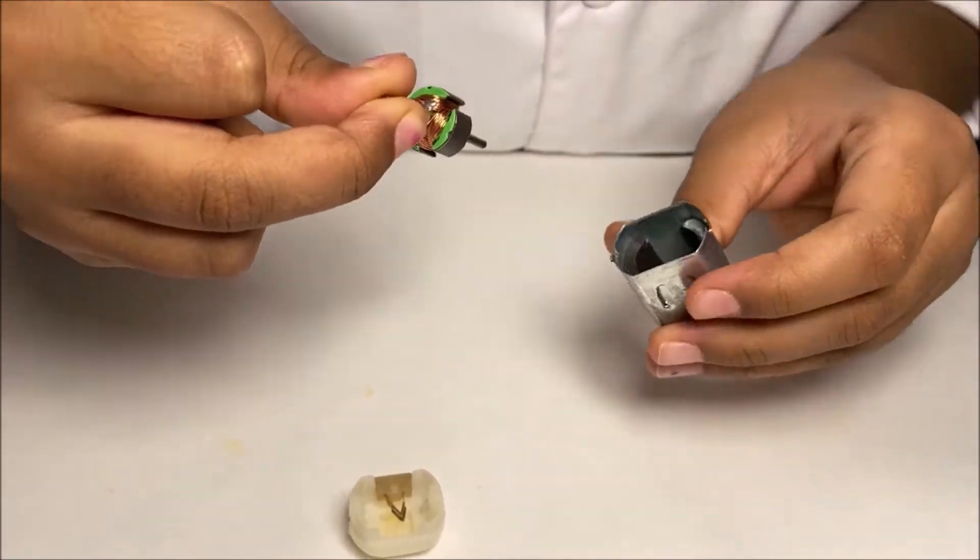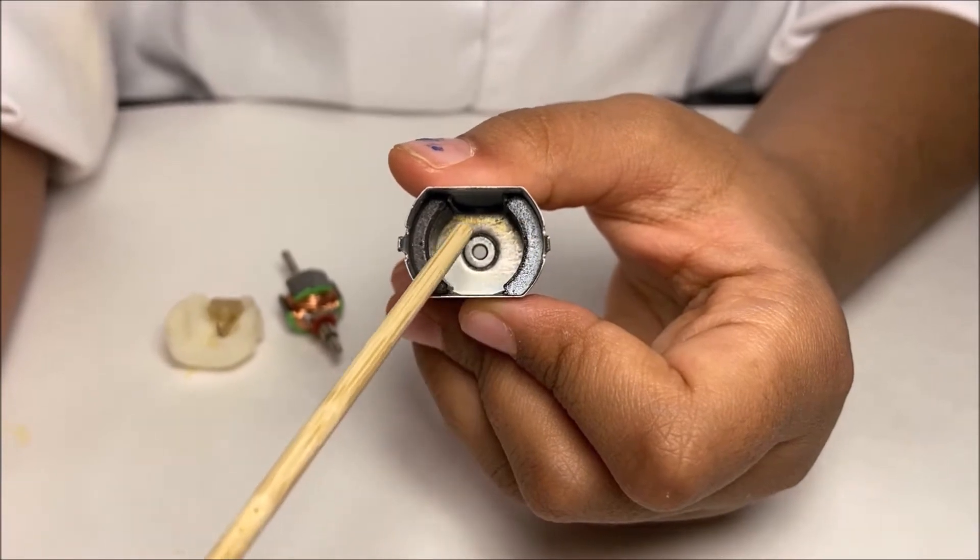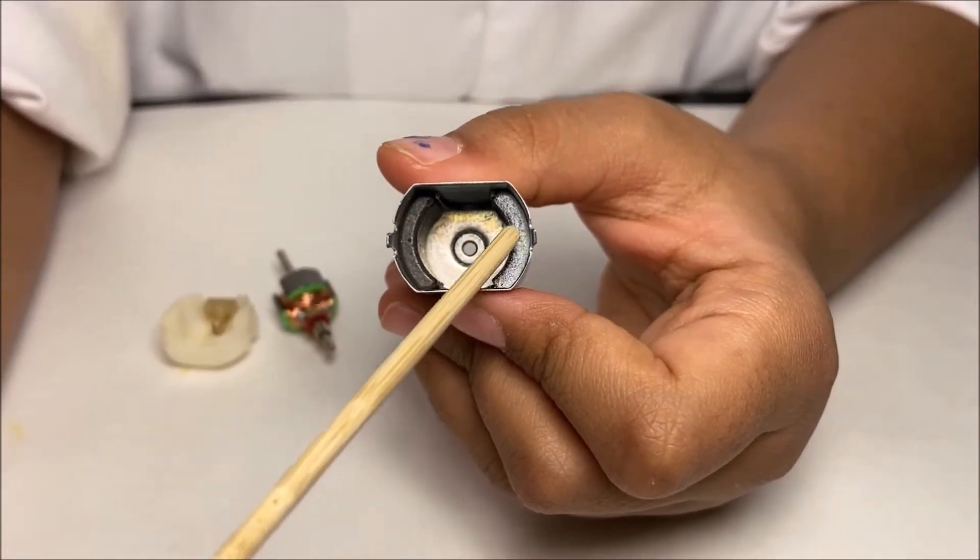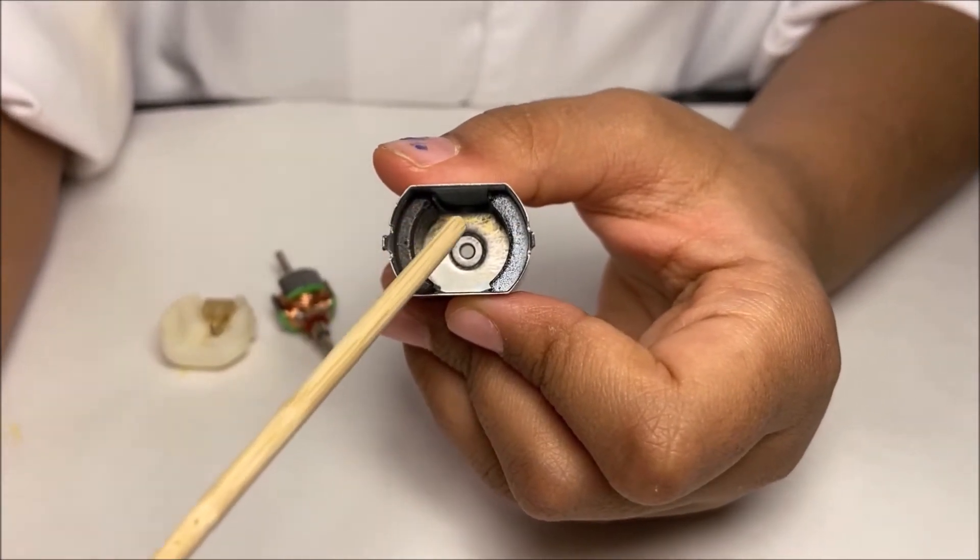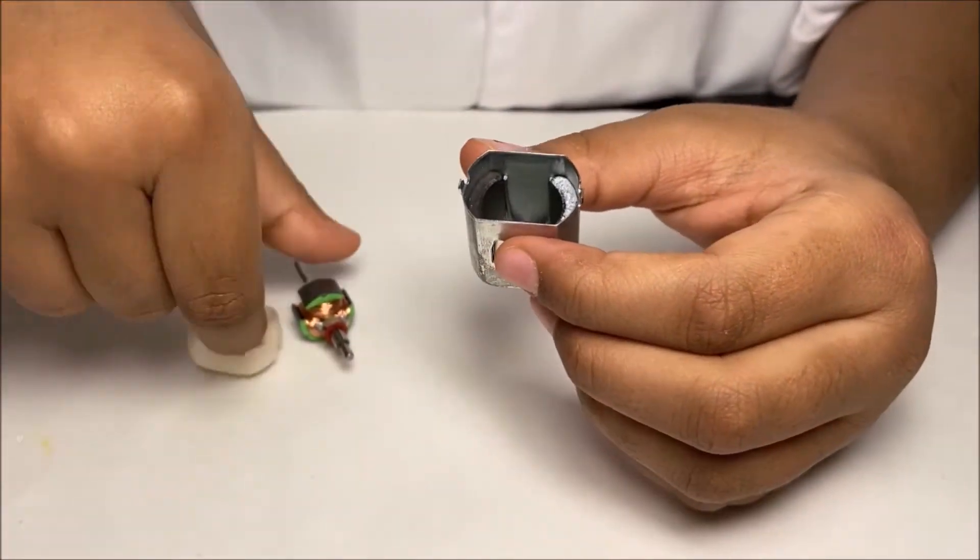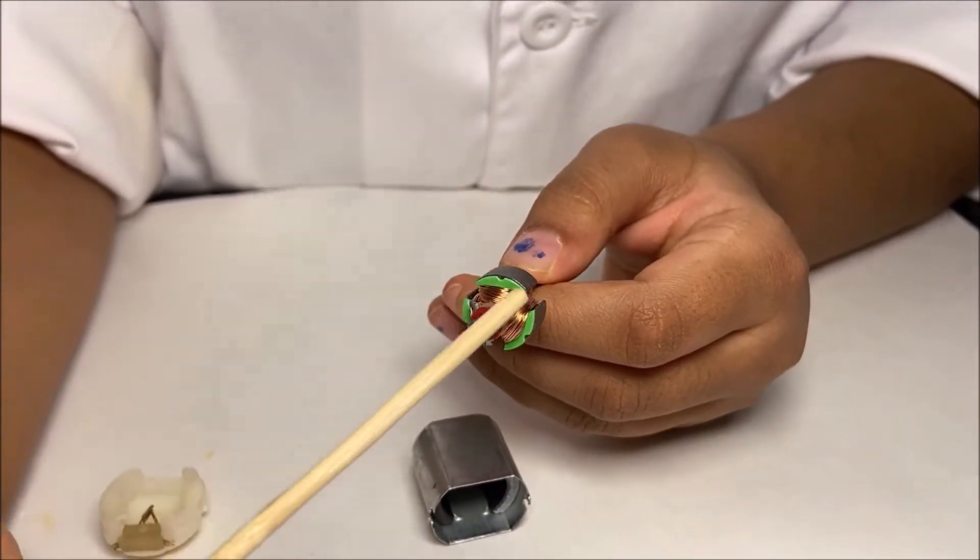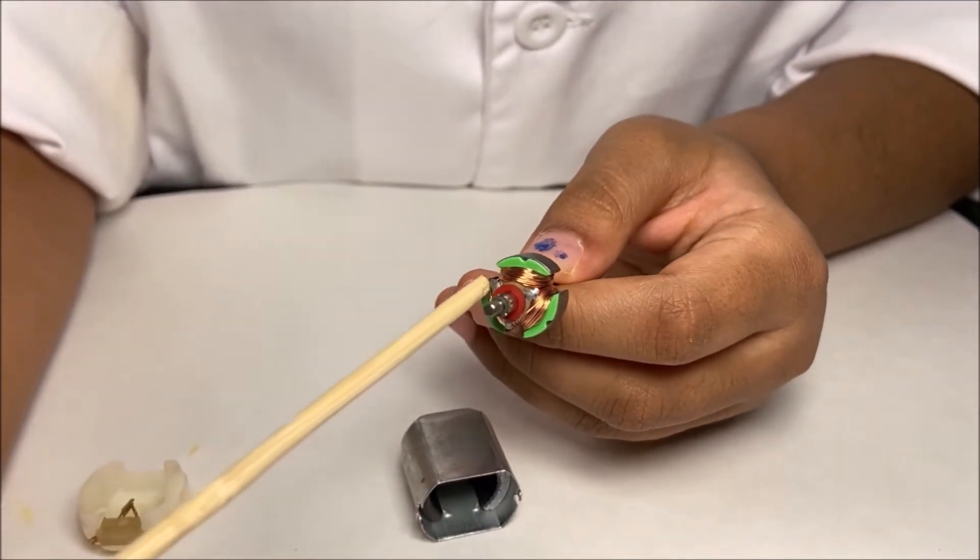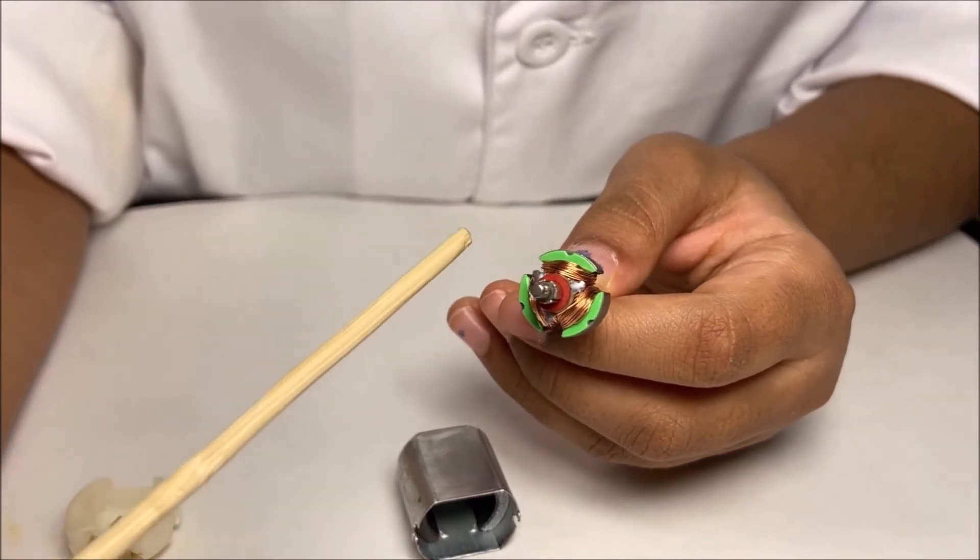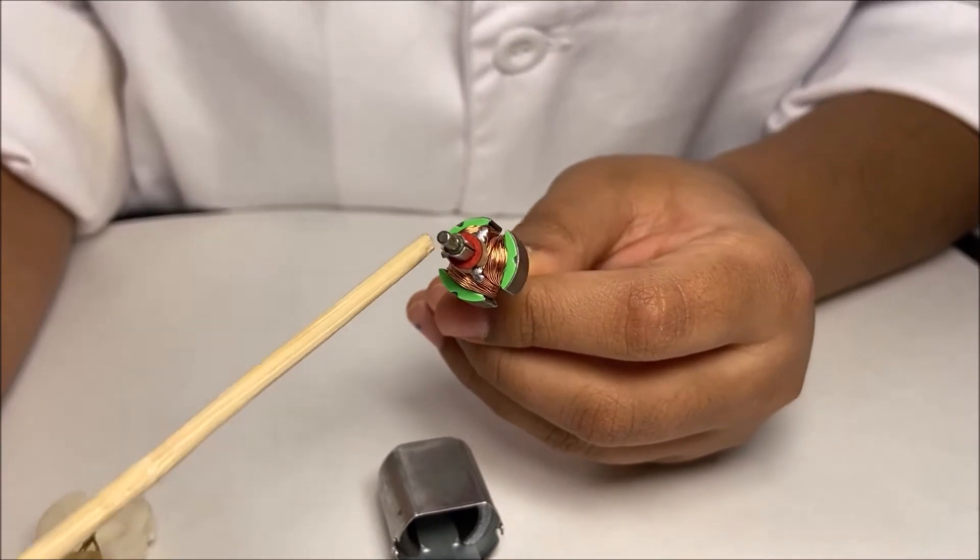These two curved things are permanent magnets and they each have a north and a south pole. The armature is a temporary magnet when current passes through it.